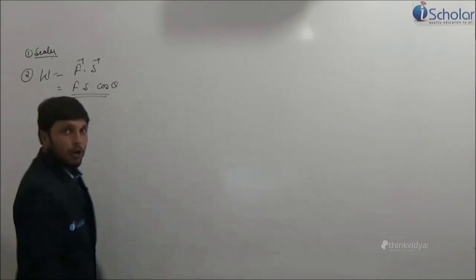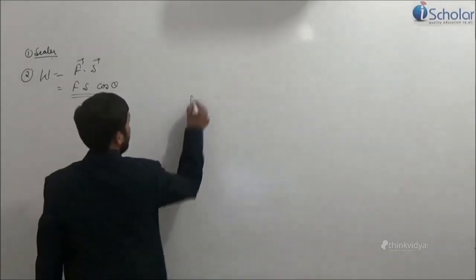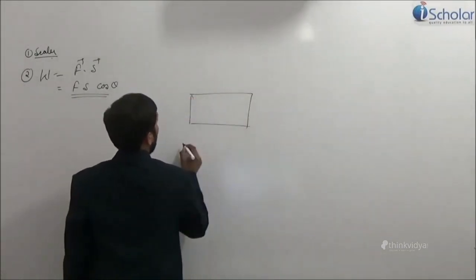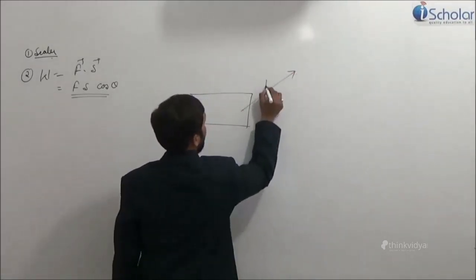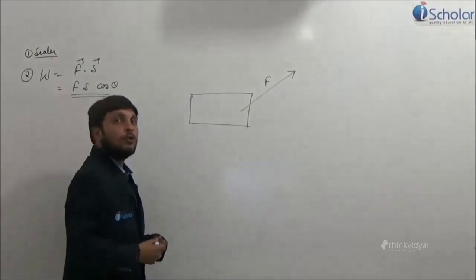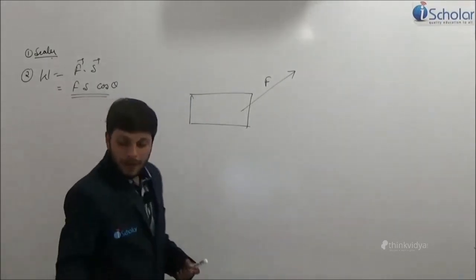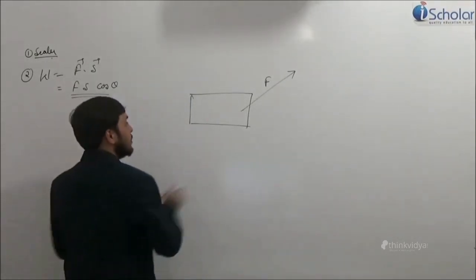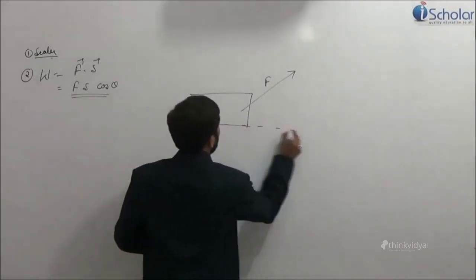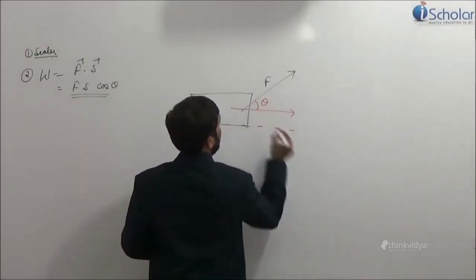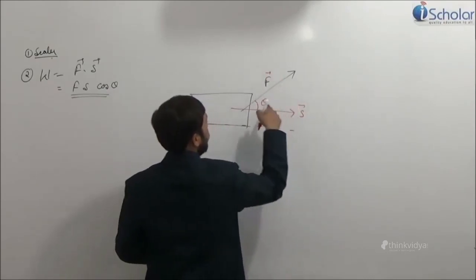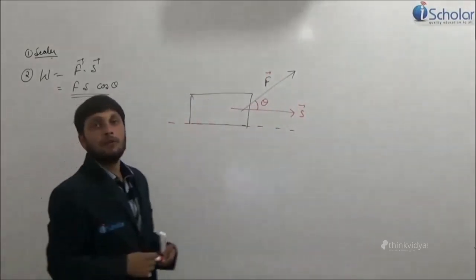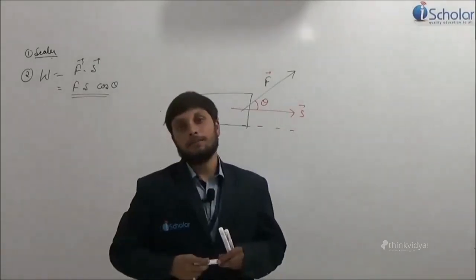In order to make you comfortable with this, suppose this is a block on which you are pulling this block like this. So force is applied in this direction. You know very well that the block may or may not be lifted. But suppose in general, if the block moves like this, then this is the angle theta, this is the S. The dot product of these two vectors will give you the work done.